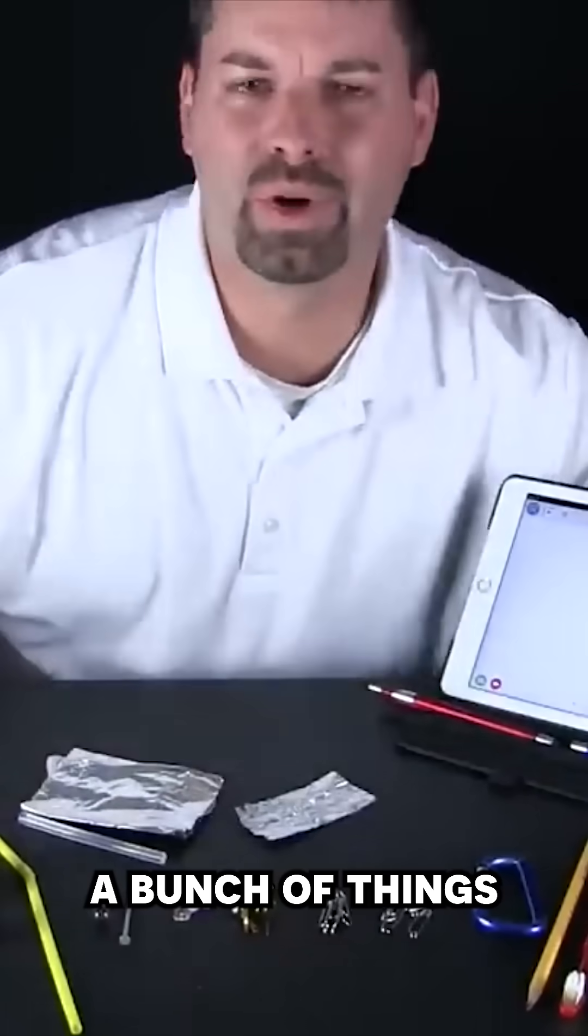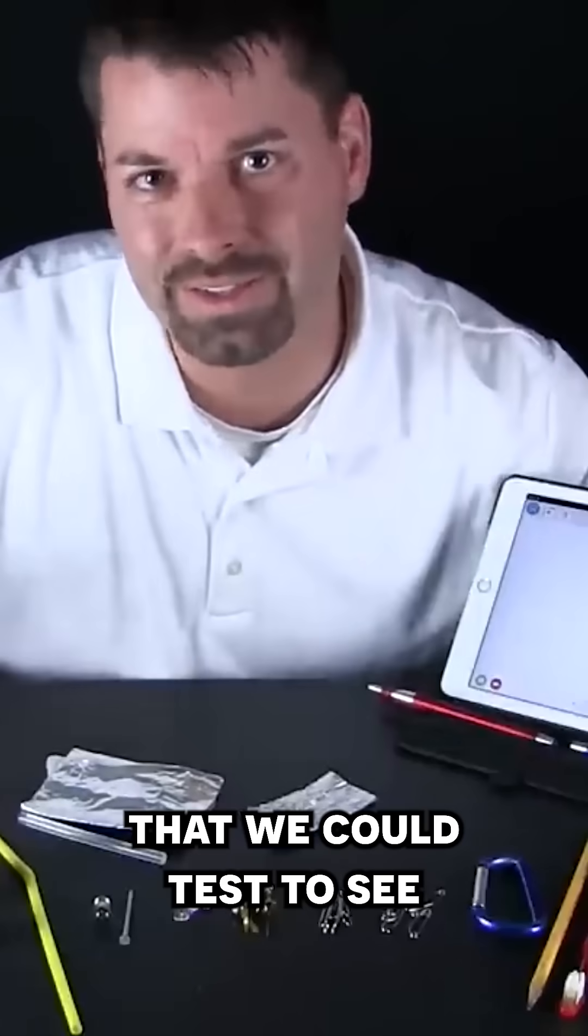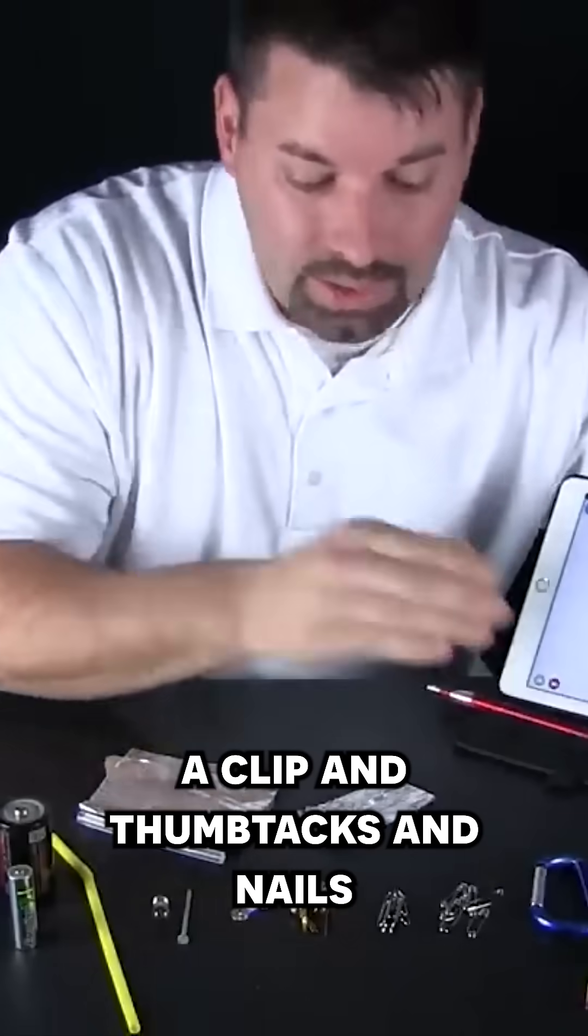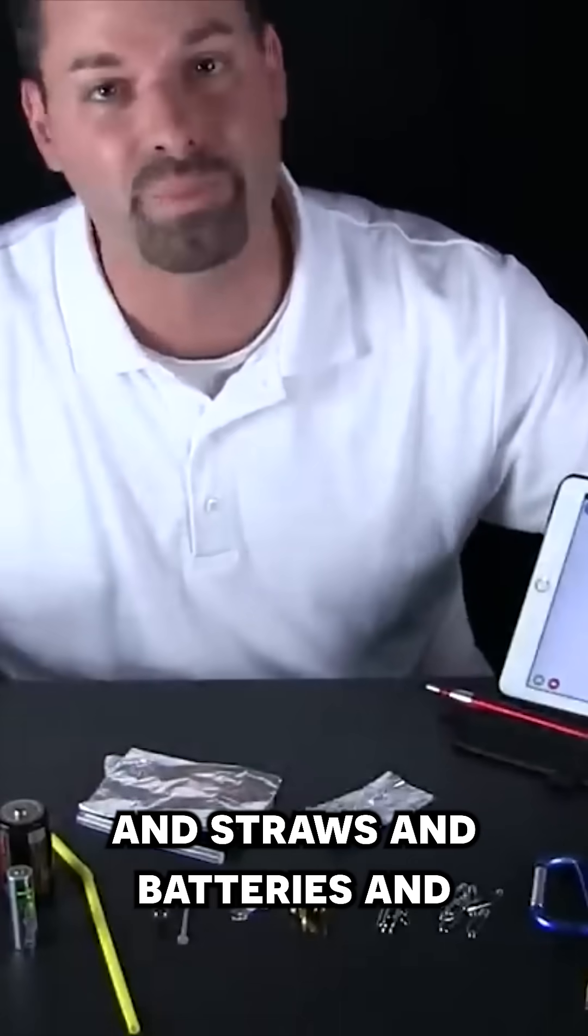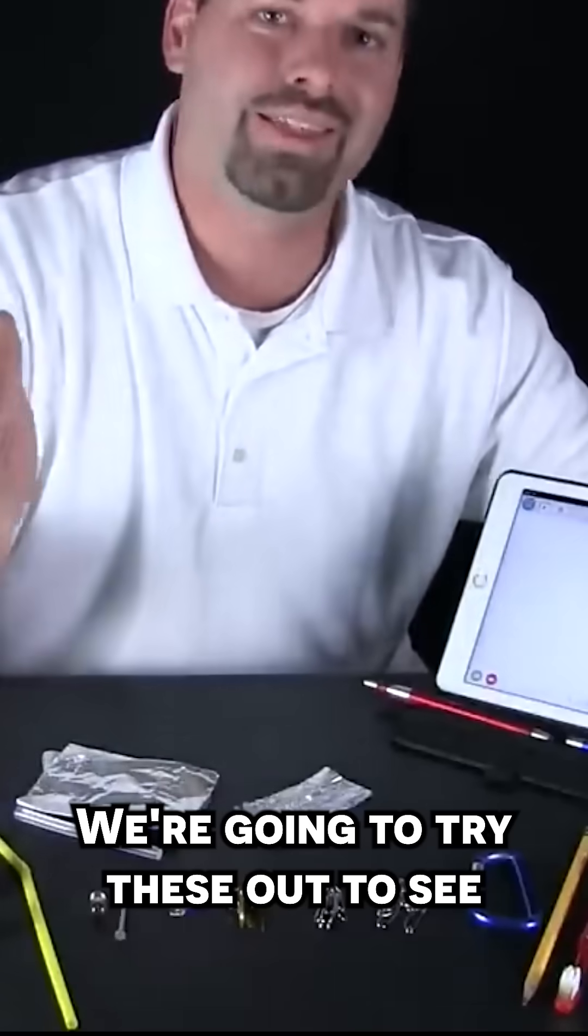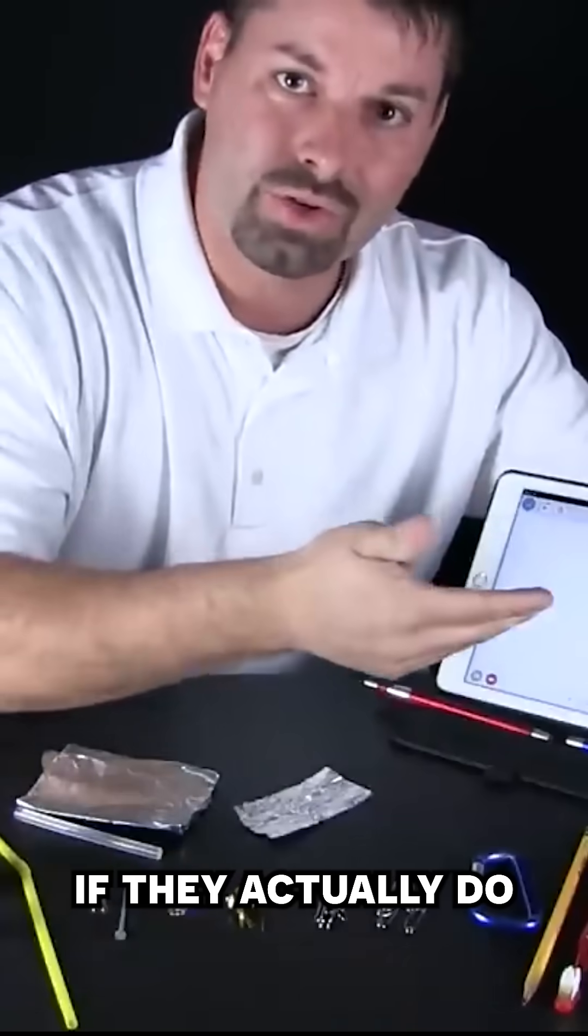The first thing you need to do is gather up a bunch of things that we could test to see if it actually works. We have pens, a clip, thumbtacks, nails, light bulbs, straws, batteries, and even a wrench. We're going to try these out to see if they actually do allow us to draw on our screen.